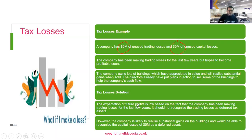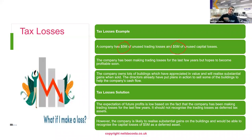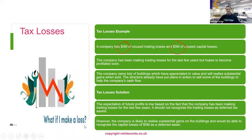So if you have a likelihood that you're going to have profits against which to use up the trading losses, you can recognize the trading losses as an asset — if the company is profitable, by all means recognize them. And if you're going to make capital gains, you can recognize the capital losses as an asset as well.